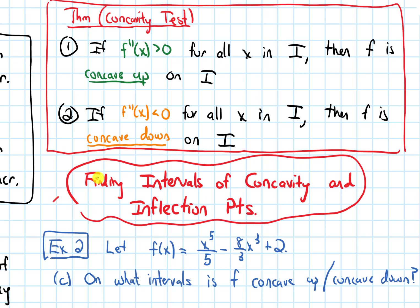In this video, we'll discuss how to find where a function is concave up and concave down and its inflection points. The example I want to look at is a function we looked at earlier in this section for increasing and decreasing. It was x to the 5 over 5 minus 8 thirds times x cubed plus 2.